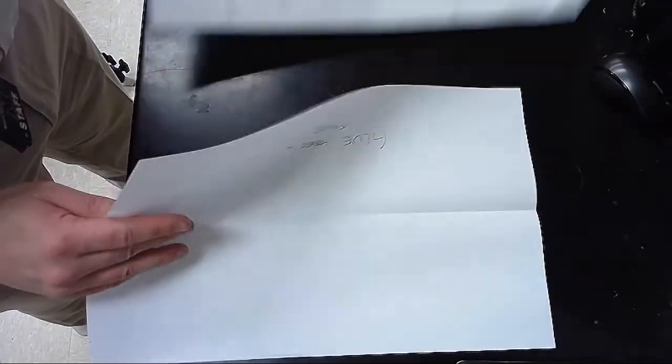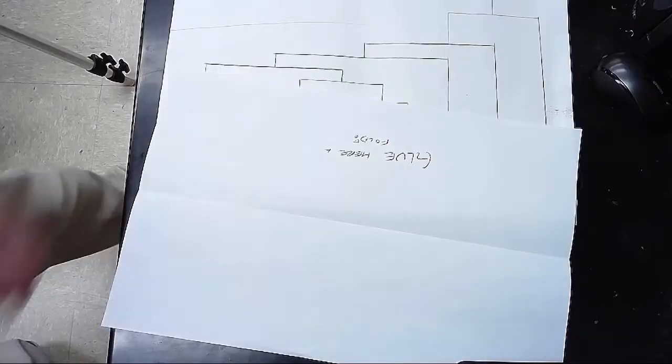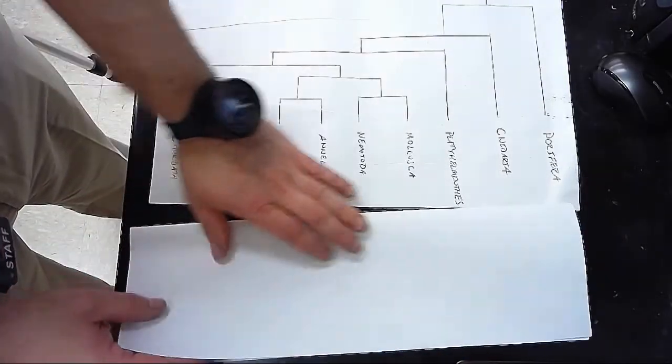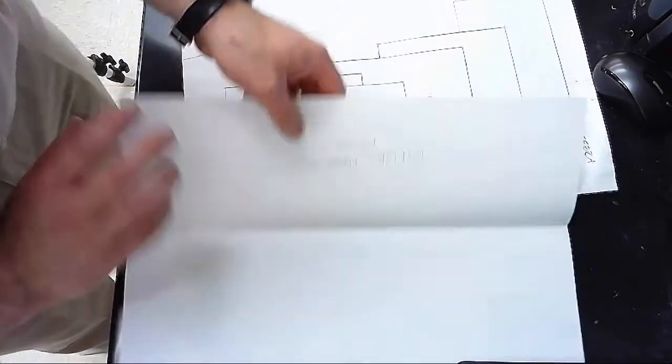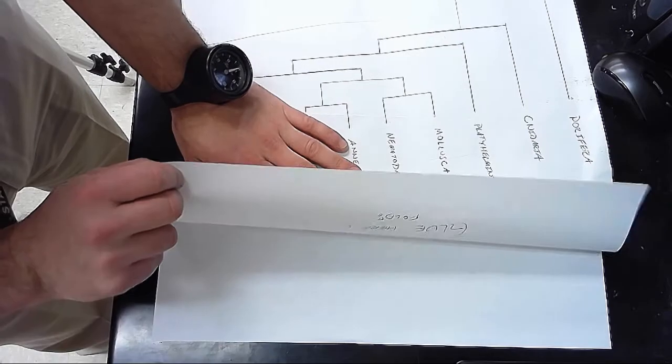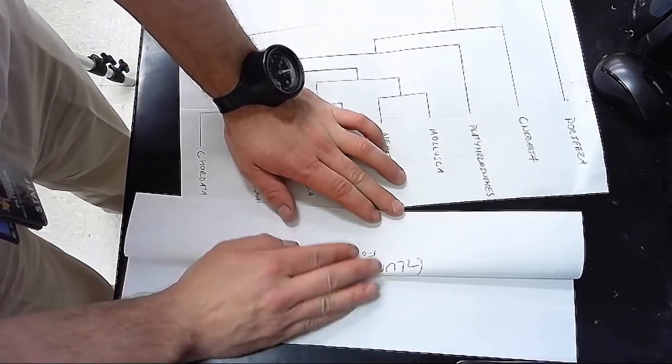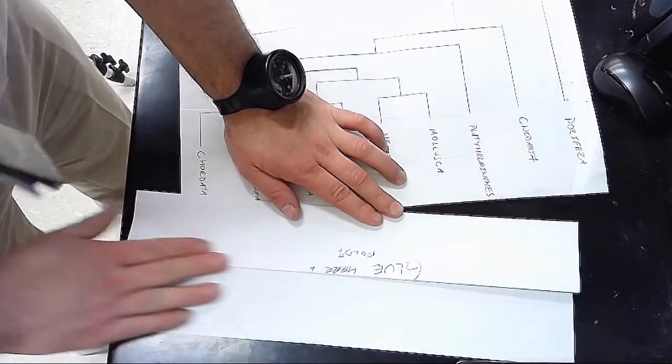We've got our cladogram, we've got our new paper that we just folded in half. This part where it says glue here, we want to fold it in half so that the part that says glue here comes up. So we'll fold it in half, take this part that we just folded, not the whole thing, just the part that we folded.